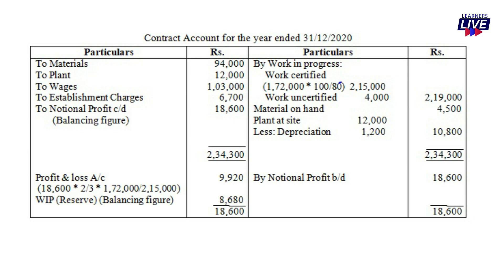Work certified is 80% of the cash received. Cash received is $172,000, so we calculate work certified as $172,000 × 100/80 = $215,000. Work uncertified is $4,000, giving a total of $219,000. Materials on hand (closing stock) is $4,500. The balance is $18,600.